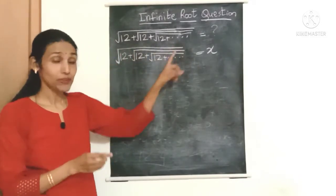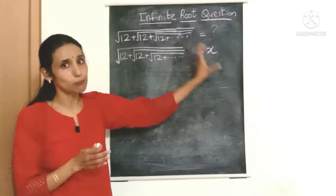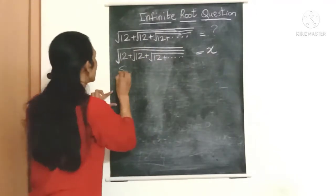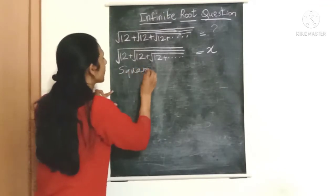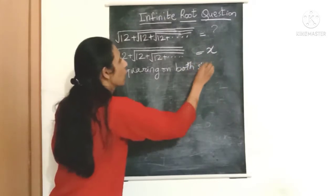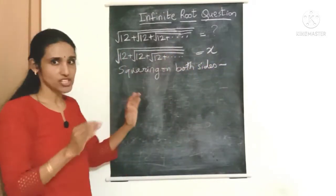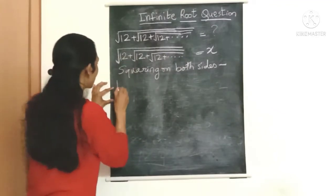So how do we get rid of that? Yes, by simply squaring on both the sides. So let's do that. Squaring on both the sides, let's see what we end up with.